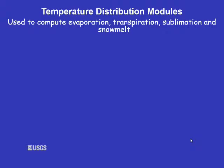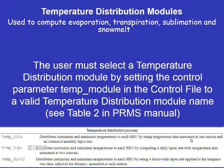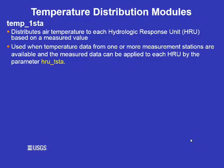I will first go over the temperature distribution modules. These modules are used to compute evaporation, transpiration, sublimation, and snow melt. In your control file, you need to set the control parameter temp_module to a valid temperature distribution module name. The table shows the choices, straight out of table 2 in the PRMS manual.